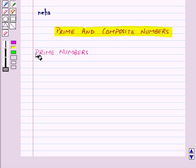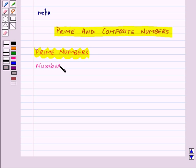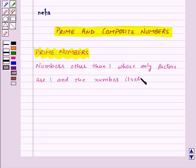So first of all, let us see what are prime numbers. Numbers other than 1 whose only factors are 1 and the number itself are called prime numbers.